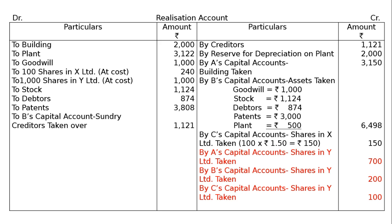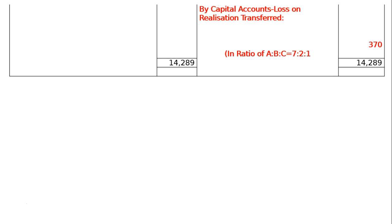Rs. 1000 worth of shares are there, to be taken in the profit sharing ratio of 7:2:1. That is Rs. 700, Rs. 200, Rs. 100. The totalling on the credit side is Rs. 14,289. Total the debit side — that is also Rs. 14,289. Take it to the credit side Rs. 14,289 and find out the gap: Rs. 370 — the loss. By Capital Accounts, loss on Realization transferred in ratio of A:B:C = 7:2:1.